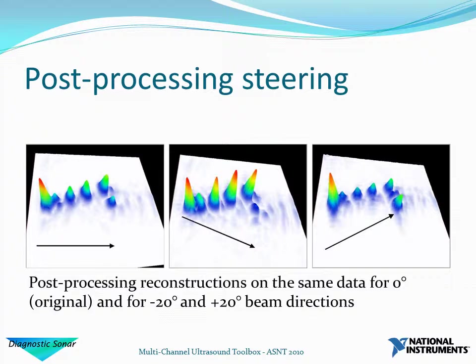One of the advantages of the FRD technique is that from exactly the same data you can do post-processing steering. On the left-hand side we see the zero-degree beamform. With exactly the same dataset we can change the delay profile implemented for the full raw data processing, giving us minus 20 and plus 20 degree imaging in the middle and right. The left-hand image shows lower echo amplitudes for subsequent holes due to shadowing from the first. With minus 20 degrees we send the energy in so that there is much less shadowing, and we see the echo amplitudes all matched.